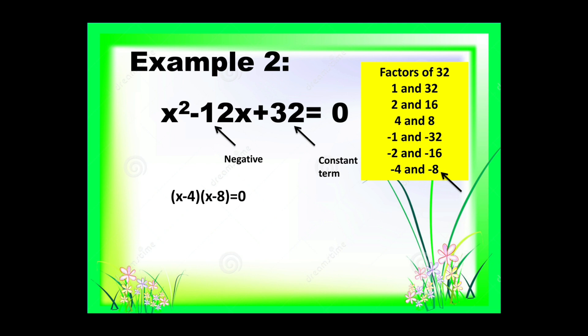So we will be having the quantity of x minus 4 times the quantity of x minus 8 is equal to 0. We need to equate the two factors to 0, so we have x minus 4 is equal to 0, and x minus 8 is equal to 0. Transposing negative 4 and negative 8 to the other side, both become positive: x is equal to 0 plus 4, and x is equal to 0 plus 8. That gives us the roots 4 and 8. The roots of x squared minus 12x plus 32 equals 0 are 4 and positive 8.